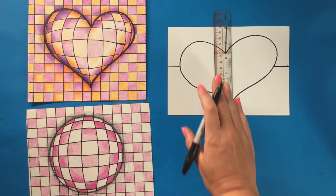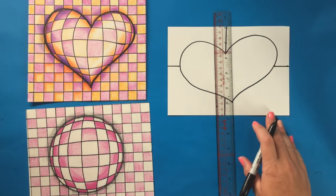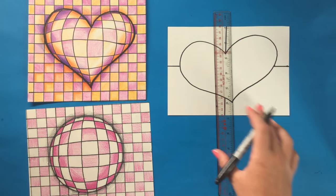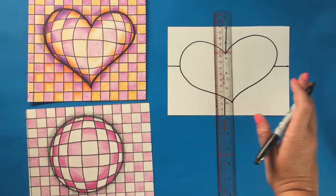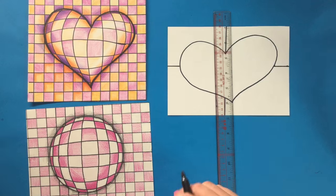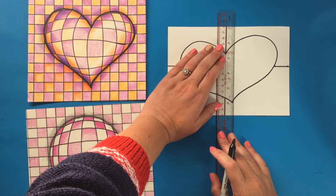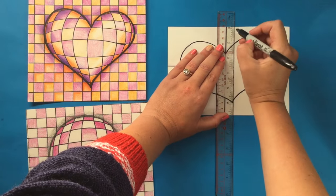Now what I want you to do is fill in your checkered board pattern by creating even sections of lines across and down your paper, starting from that middle line, both horizontally and vertically.